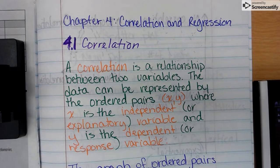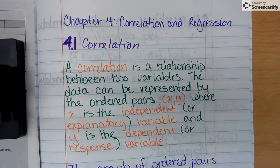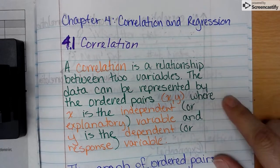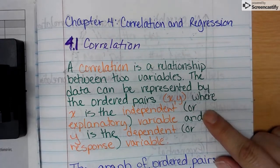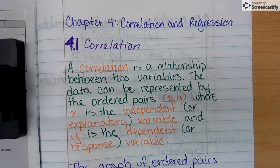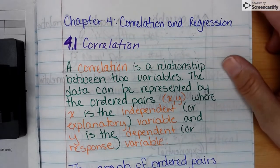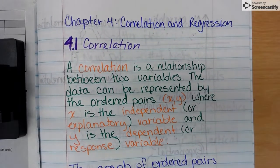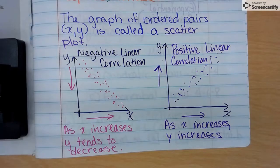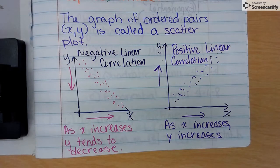Okay, this is the Chapter 4 notes, 4.1 Correlation. Correlation is a relationship between two variables. The data can be represented by the ordered pair (x, y), where x is the independent or explanatory variable and y is the dependent or response variable. The graph of ordered pairs is called a scatterplot.